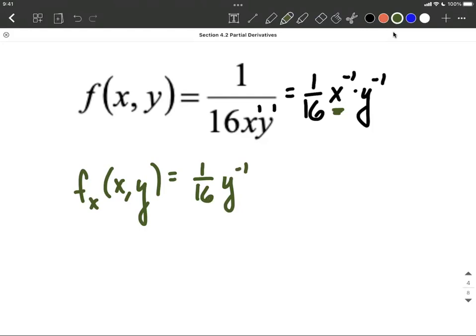Using the power rule, we bring the exponent down in front, multiplying by negative 1. Then we reduce the exponent by 1, so negative 1 minus 1 makes negative 2. Cleaning this up by moving negative exponents back to the denominator gives us negative 1 over 16yx squared.